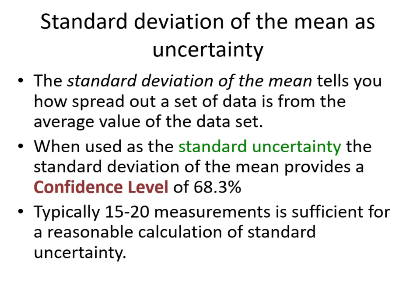The standard deviation of the mean tells you how spread out your data set is from the average. A big standard deviation means your data is not very precise — there's a large difference between the average and individual measurements. A small standard deviation means your measurements are very precise and close to the average. The standard deviation of the mean provides a confidence level of 68.3% that your measurement falls within that interval — about 70%, which is pretty high.